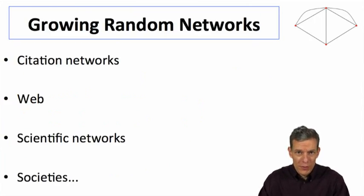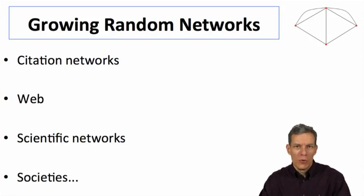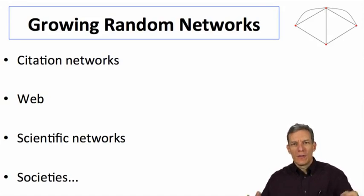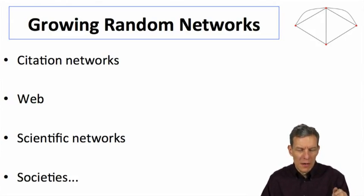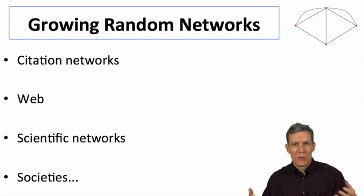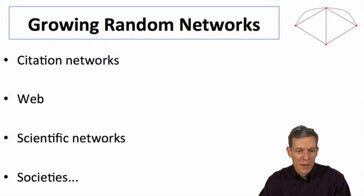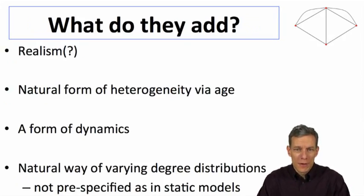There are lots of examples where this happens in the world. A prime example is citation networks. New articles are born over time. New articles can form links by citing old articles, but old articles can't cite new articles. So articles are going to accumulate links over time and newer articles are going to have fewer links than older ones. The same thing applies to web pages and collaboration networks. In co-authorships, older researchers will have had more collaborations than younger ones. Generally, in human situations you're going to have some older and some younger with different characteristics based solely on age.